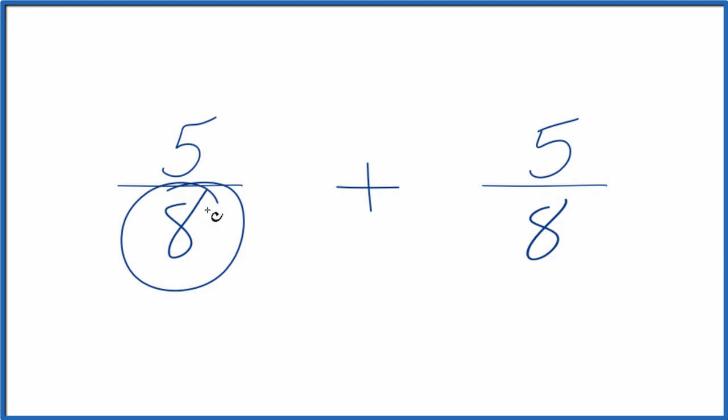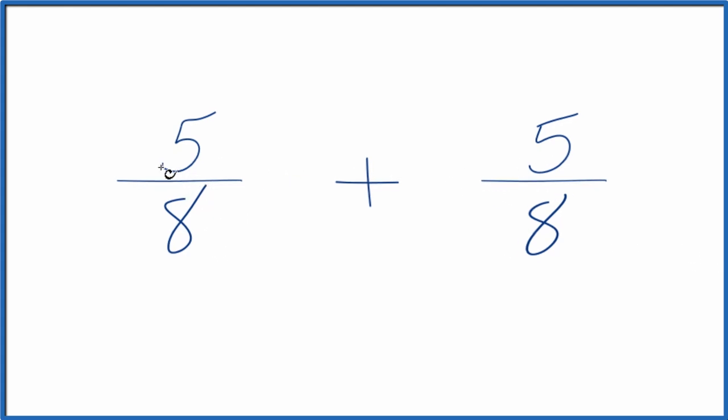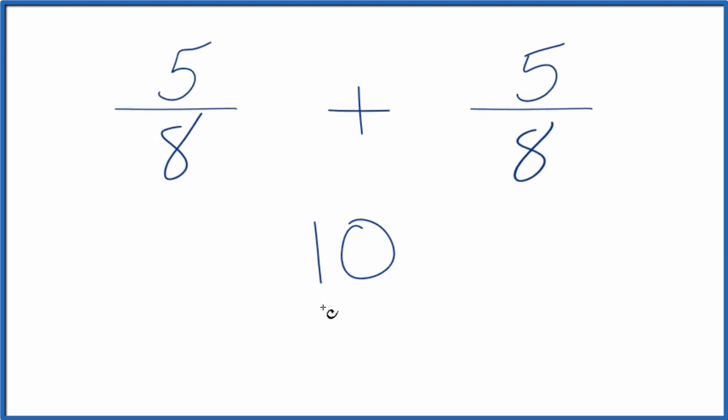So for 5 eighths plus 5 eighths, we could just add 5 plus 5, which would give us 10. And then since our denominators are the same and we're doing addition, we just keep that as 8. So 5 eighths plus 5 eighths, that equals 10 eighths.